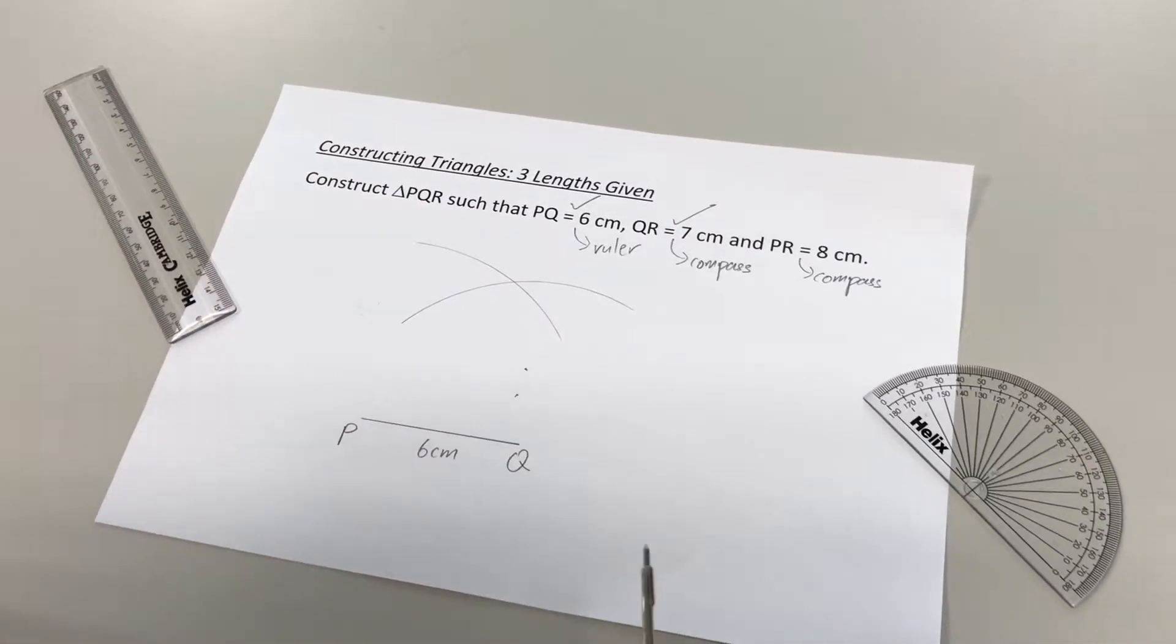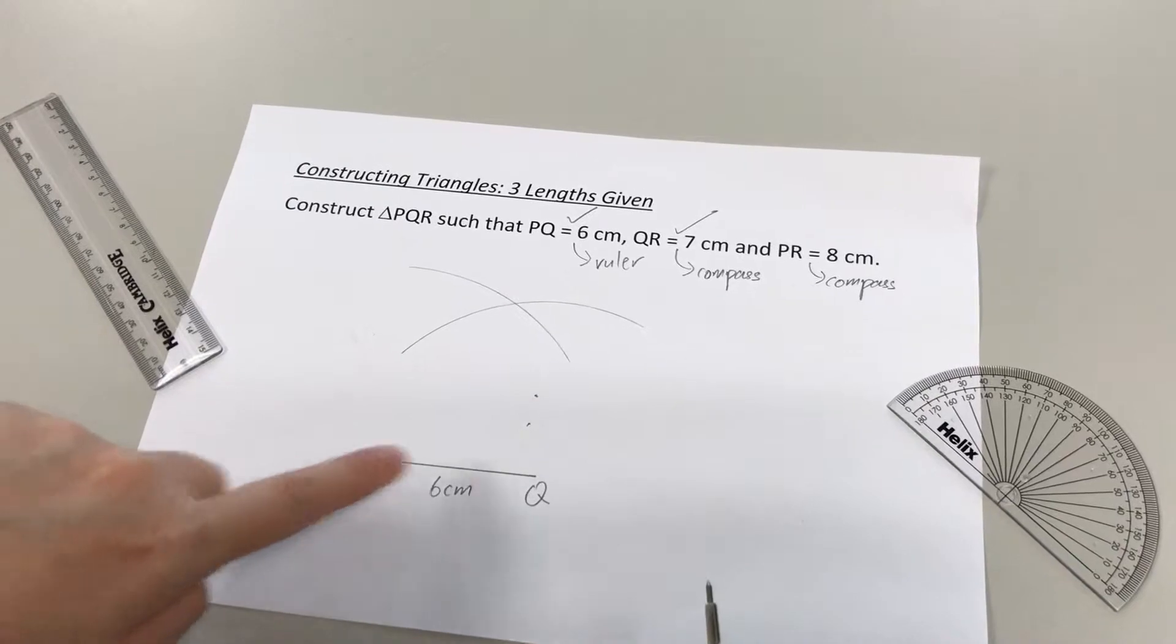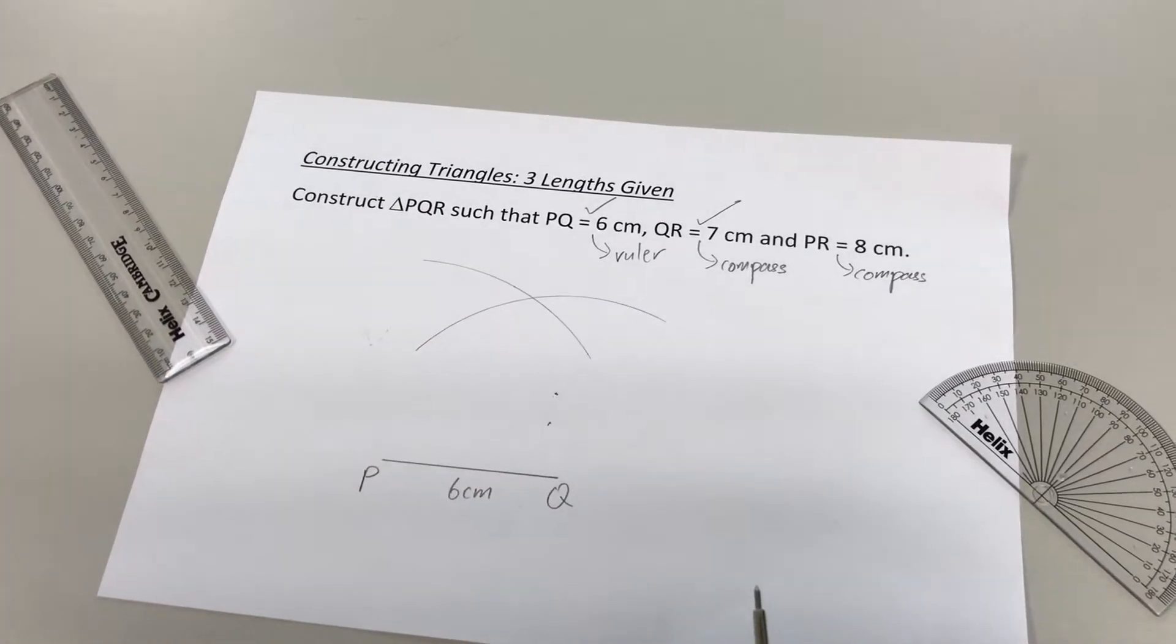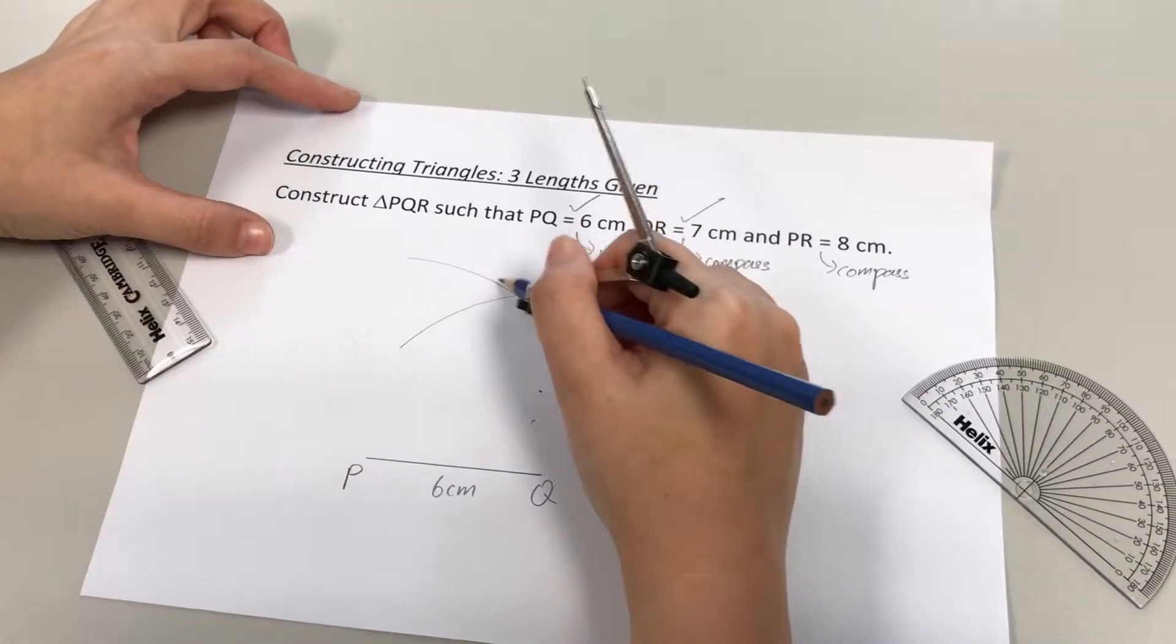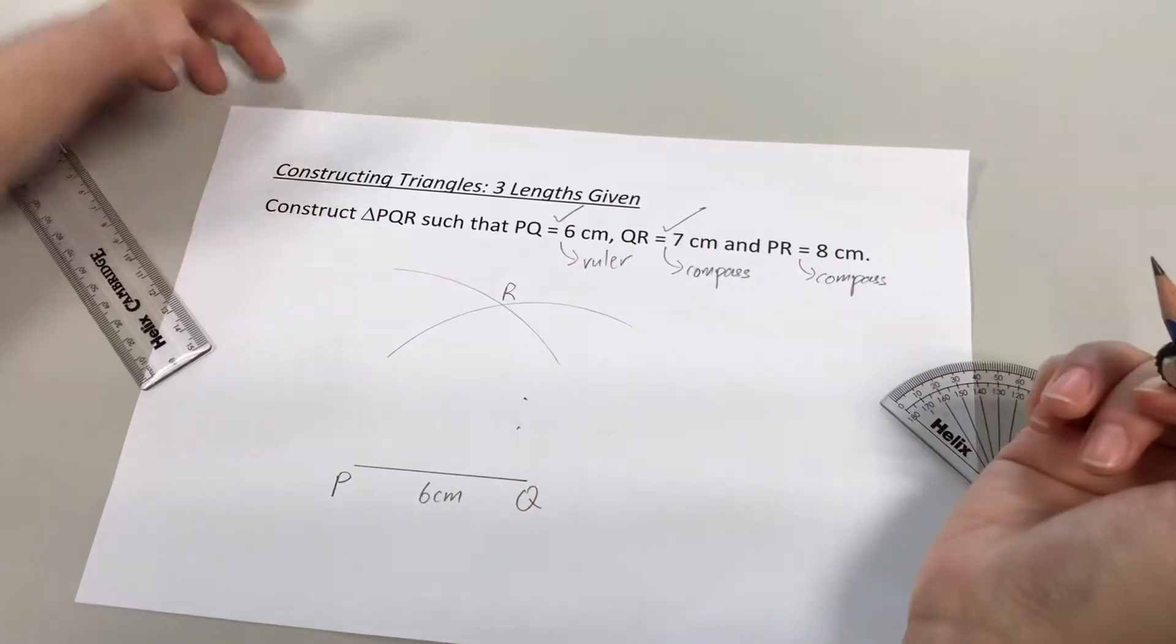All right, so why do we have to make them meet each other? It is to help us locate the third point of a triangle. We have P, we have Q, we are short of R. So, R is basically where the two curves met each other. So, point R is over here.